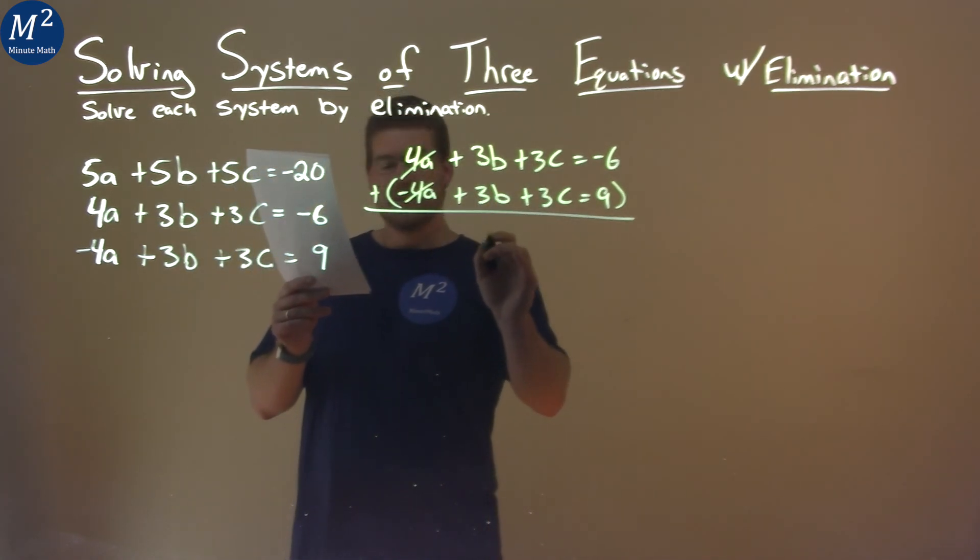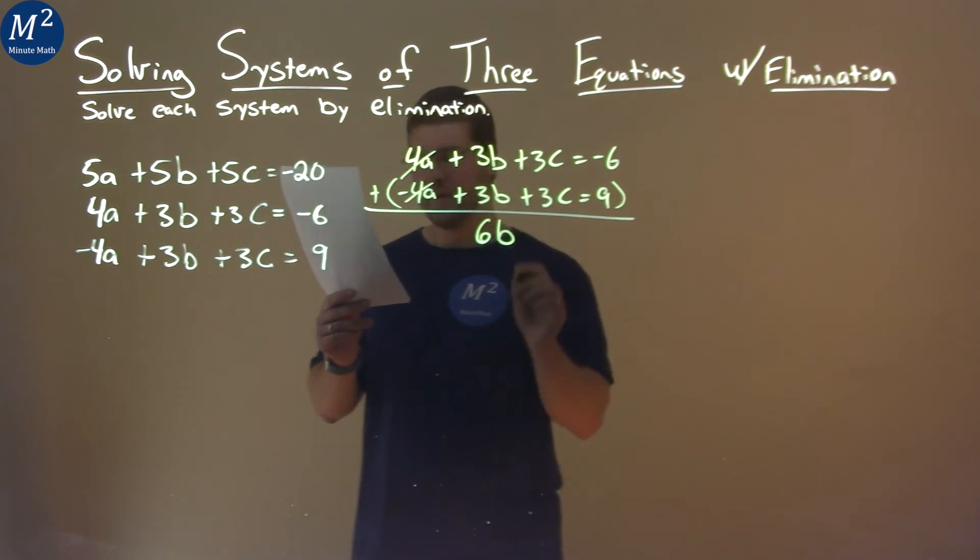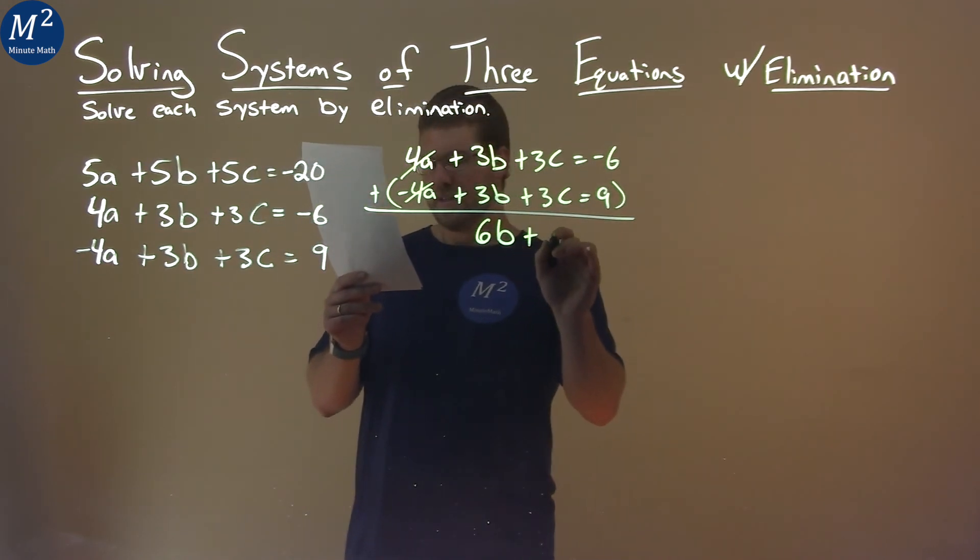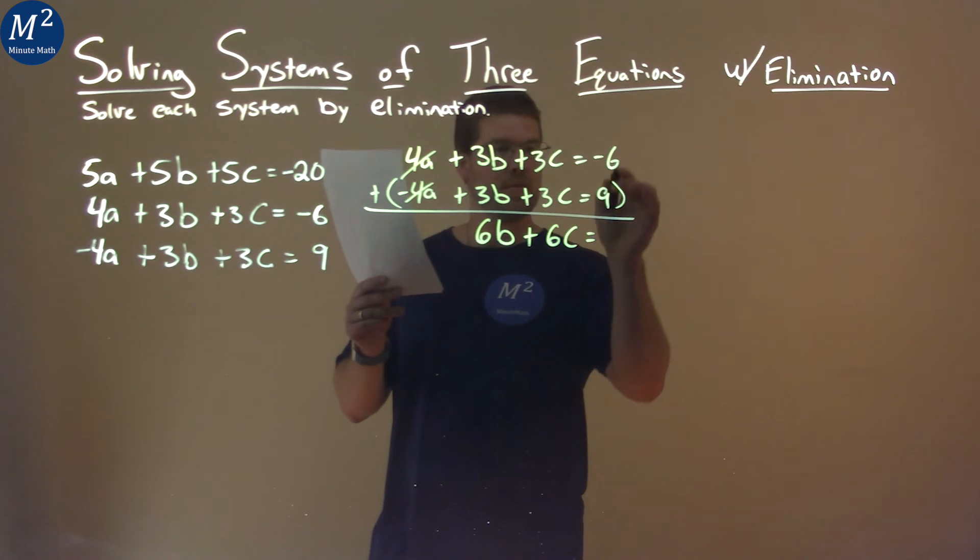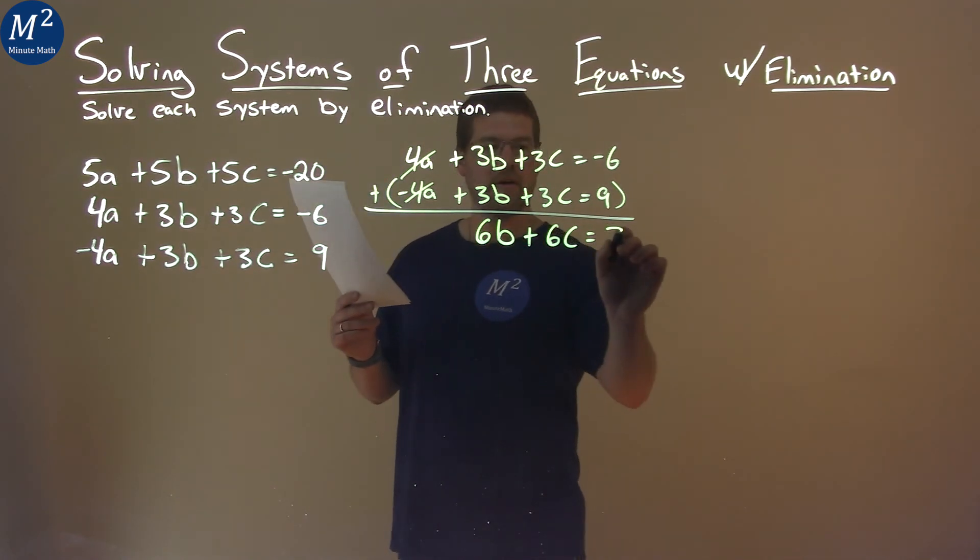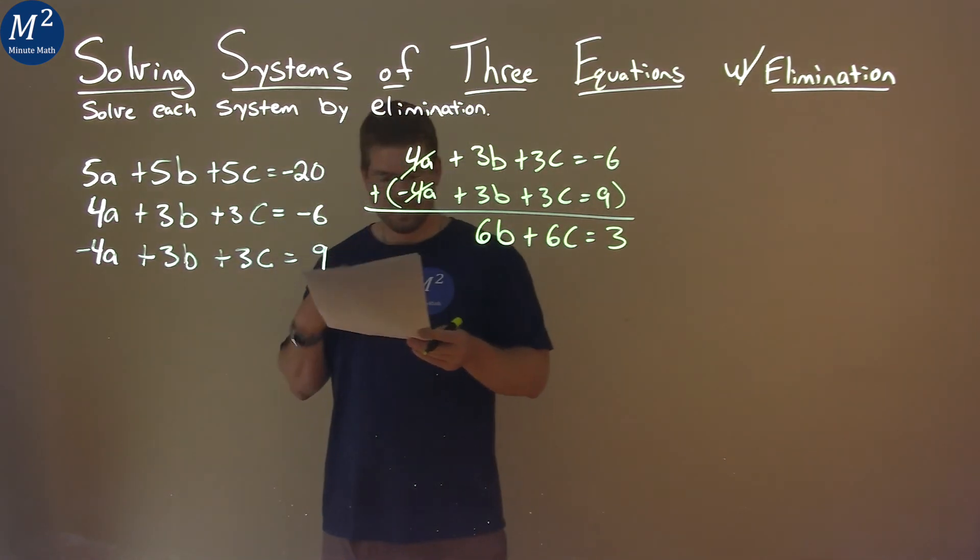So then 3b plus 3b is 6b, and 3c plus 3c is 6c as well. And that's equal to, well, negative 6 plus 9 is positive 3.